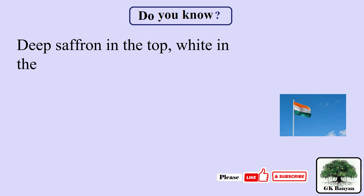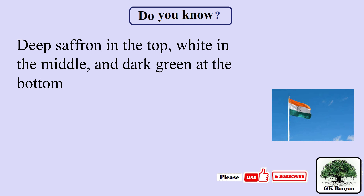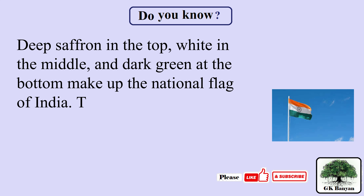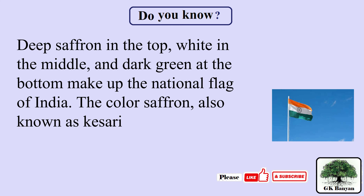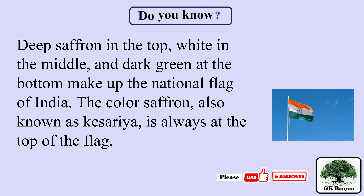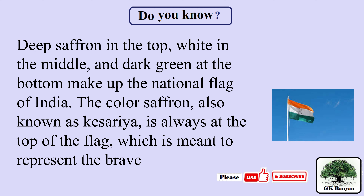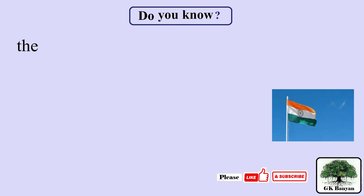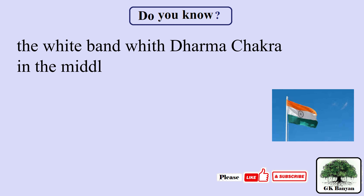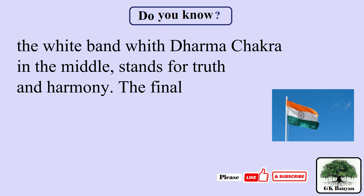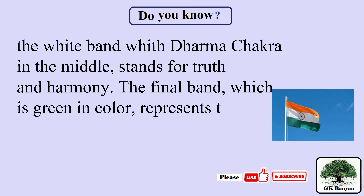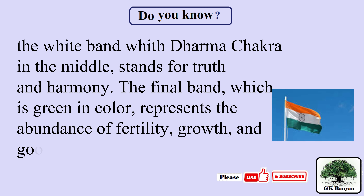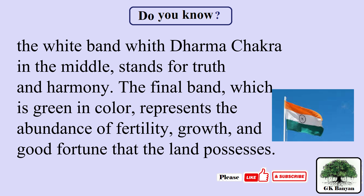Deep saffron at the top, white in the middle and dark green at the bottom make up the national flag of India. The color saffron, also known as Kesaria, is always at the top of the flag, representing the bravery and power of the nation. The white band with the Dharma Chakra in the middle stands for truth and harmony. The green band represents the abundance, fertility, growth and good fortune of the land.